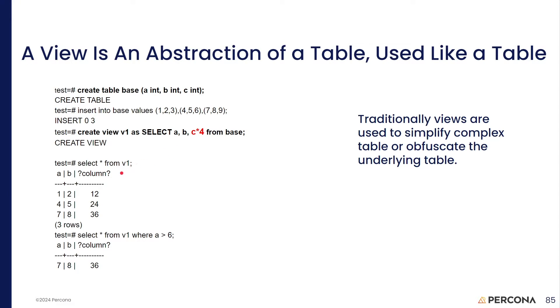So, if we run this view, we'll see that 1, 2, 3, 4, 5, 6, 7, 8, 9 has become 1, 2, 12, 4, 5, 24, 7, 8, 36. So, the various values in the last column were multiplied by 4.